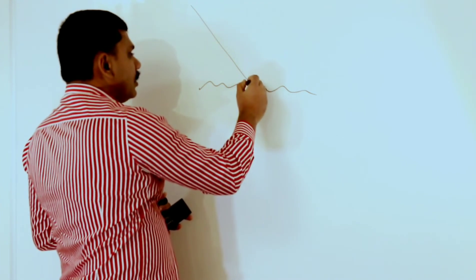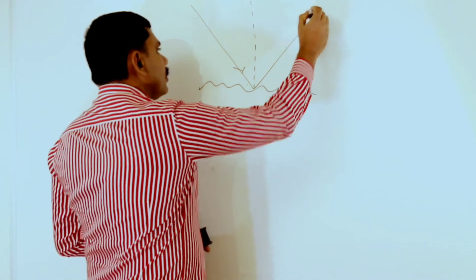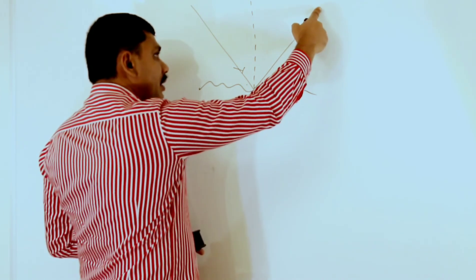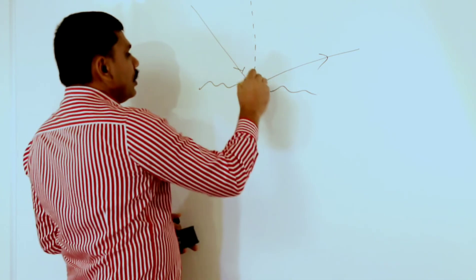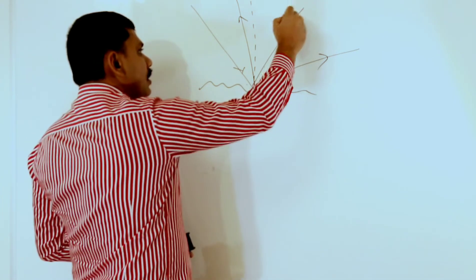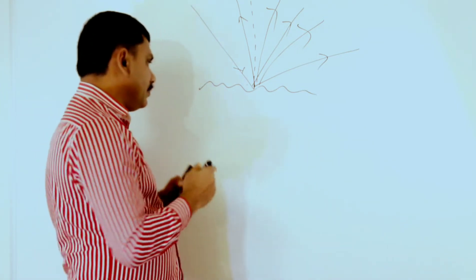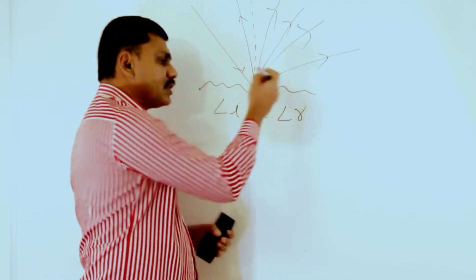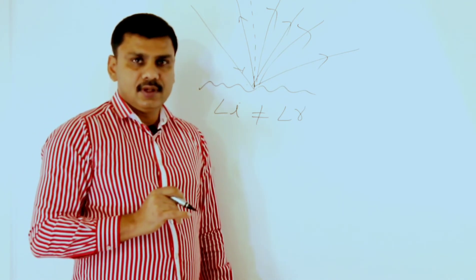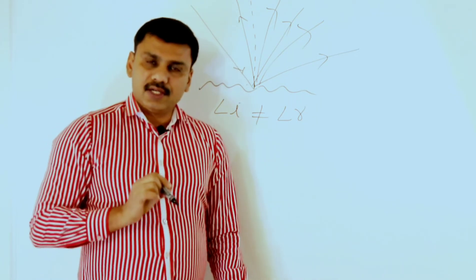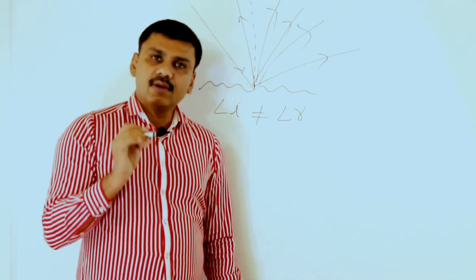In the diagram for irregular reflection, we draw the incident ray and the normal. The reflected ray can go in any direction — not just the expected path as in regular reflection. So the angle of incidence will not be equal to the angle of reflection in the case of irregular, diffused, or scattered reflection. The law is valid only for regular reflection.